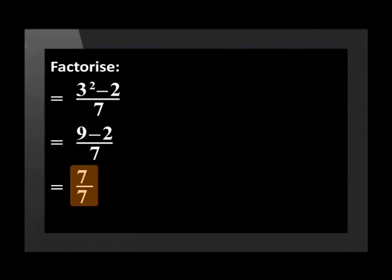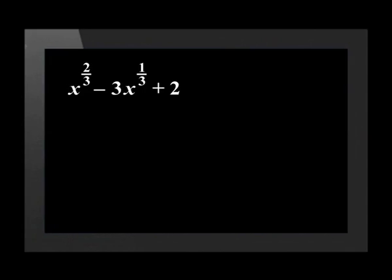This gives us 7 over 7, which equals 1. These problems take a while to get used to and a lot of practice is needed. Let's do one more question together. Look at this trinomial: x to the power of two-thirds, minus 3x to the power of one-third, plus 2. Remember how to factorize quadratic trinomials from algebra — even though the exponents are fractions, this is a quadratic trinomial.